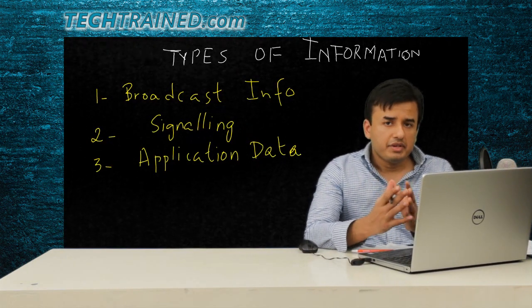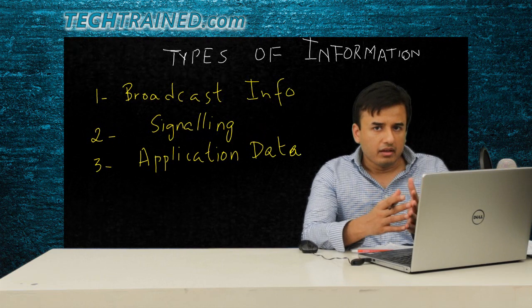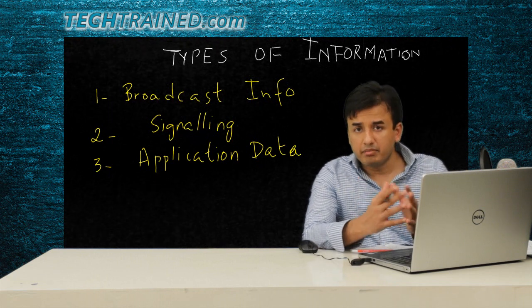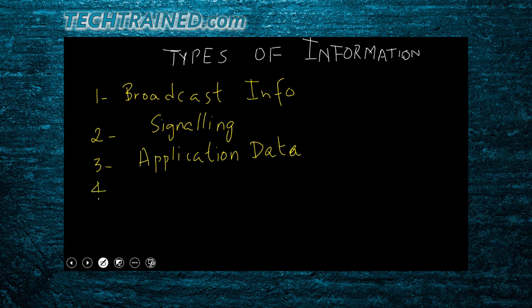Another type: if you're not using your phone and it suddenly starts ringing or you receive an email, your phone received a paging message — so another type is paging data. Last but not least, a fifth category is multicast information — for example, if you're watching a football match on your phone and receiving broadcast/multicast traffic.